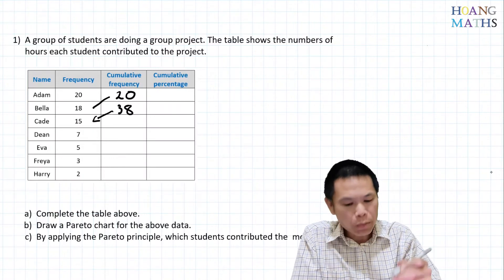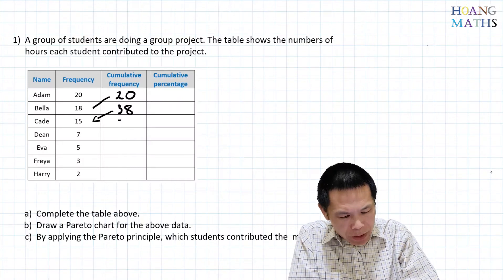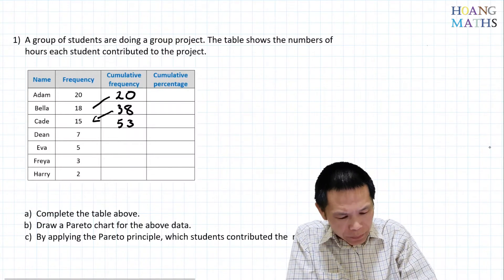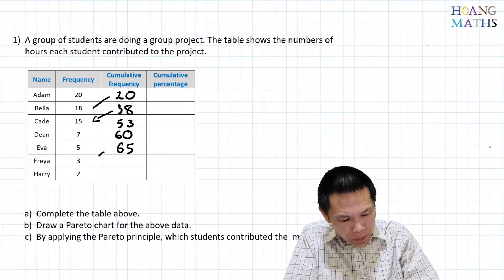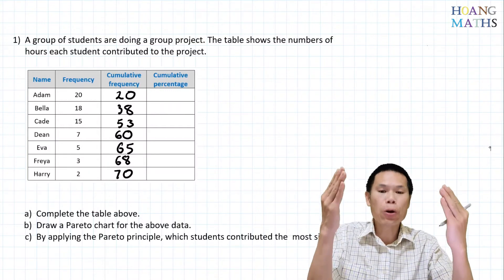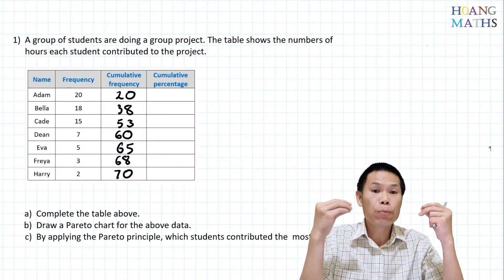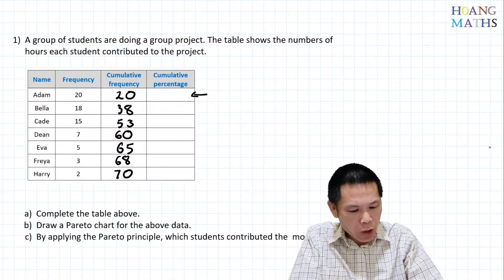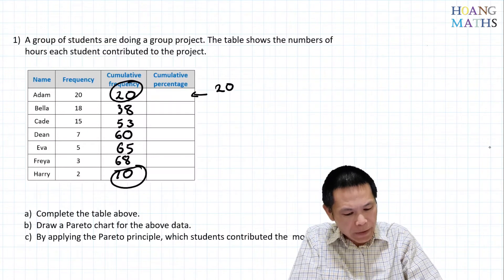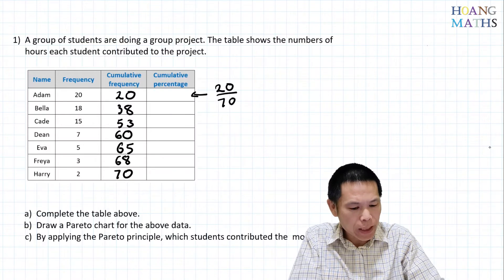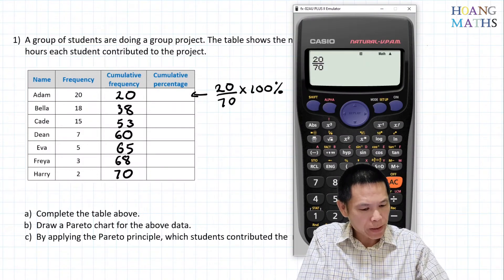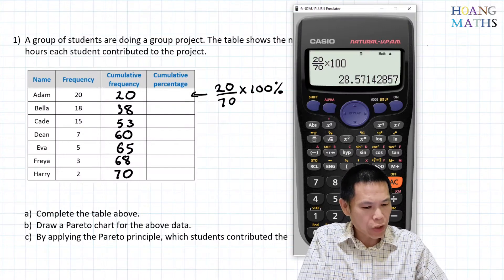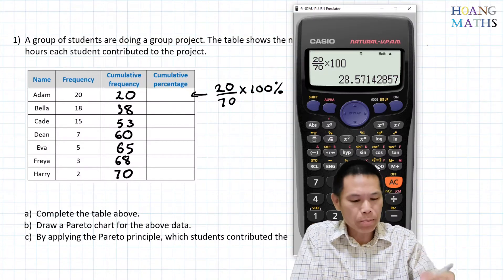Continuing: 38 plus 15 is 53, then 53 plus 7 is 60, 60 plus 5 is 65, plus 3 equals 68, and 68 plus 2 gives 70. Now we work out cumulative percentage. For the first value: 20 divided by 70 times 100% gives approximately 29%.